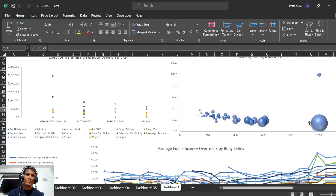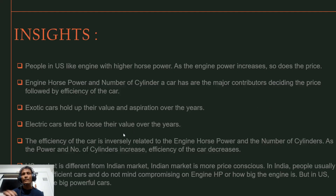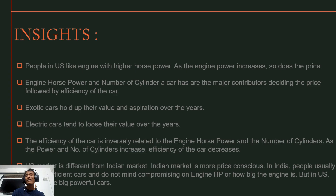Key insights: people in the US prefer engines with higher horsepower, and as engine power increases so does vehicle price — the opposite of India. Engine horsepower and cylinder count are major contributors to inflating a car's price. Exotic cars hold their value and aspirational status over the years, while electric cars tend to lose their value despite high buzz around them. The efficiency of a car is inversely related to engine horsepower and number of cylinders. The US and Indian markets are fundamentally different — India is more price-conscious with efficiency as the top purchasing factor.